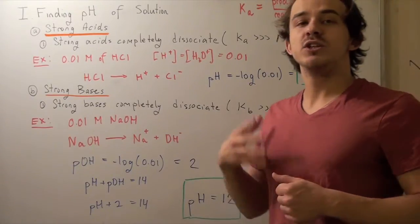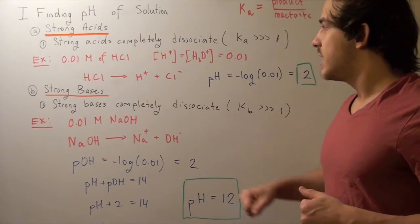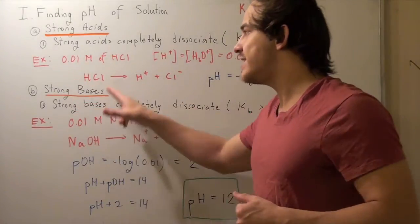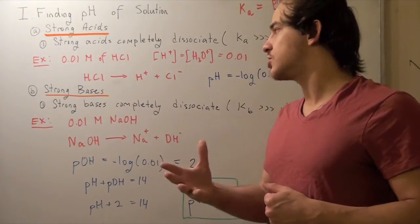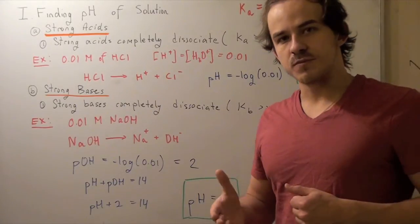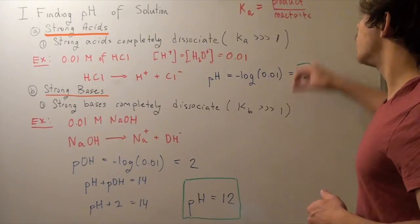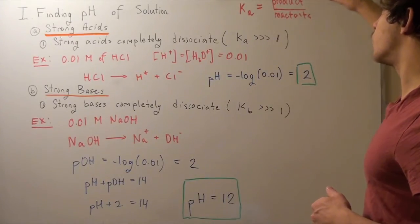Now this guy will completely dissociate. None of this HCl would be left over at the end of our reaction when equilibrium is reached. And that means if we look at our Ka expression, which is the ratio of products over reactants, or the concentration of products over reactants,